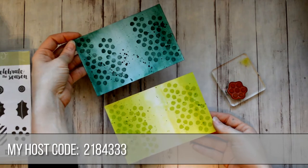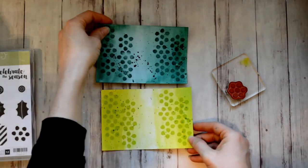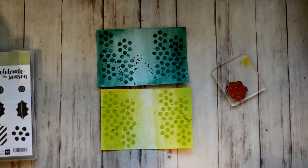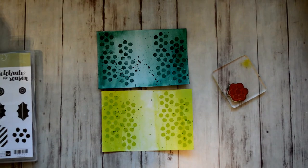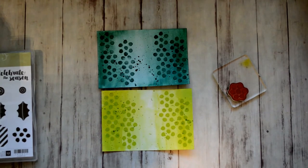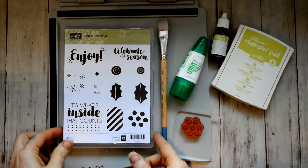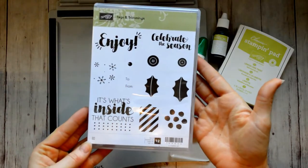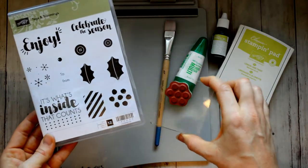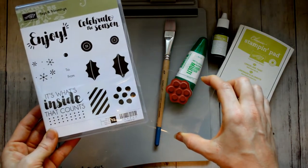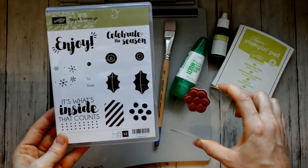This one is my favorite stamp set from the holiday catalog, the tags and trimmings, and of course everything will be linked in the description. Here I use Tranquil Tide and Lemon Lime Twist. I just had to use the little dot stamp, and I love those holly leaves and the buttons. Those can be used any time of the year, and so can the Enjoy stamp. So this is a really good stamp set.